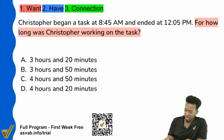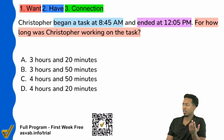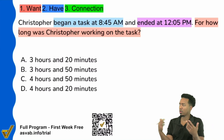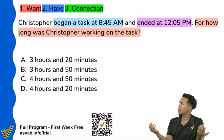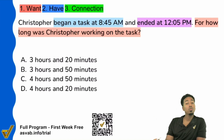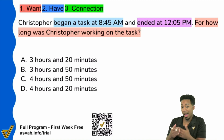The information we have says that Christopher began at 8:45 a.m. and ended at 12:05 p.m. So if we're looking for how long Christopher was working on this task, we know we need to find the difference in those times. One straightforward way is to subtract the times, which might have you convert some hours and minutes.